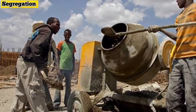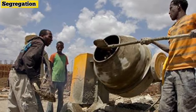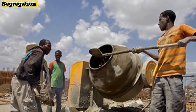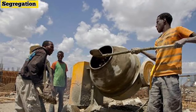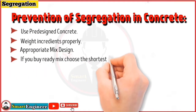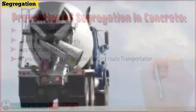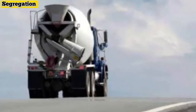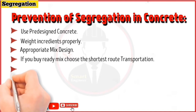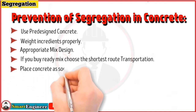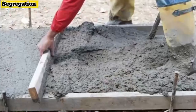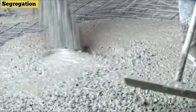Number three, make sure the concrete is properly mixed at the correct speed in a mixer for at least two minutes. Regularly check the performance of the mixer with respect to adequate uniformity of distribution of constituents in each batch. Number four, if you buy ready-mix concrete, choose the supplier such that transportation is done via the shortest route.